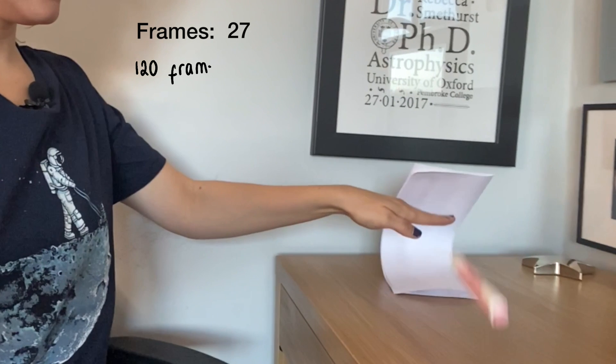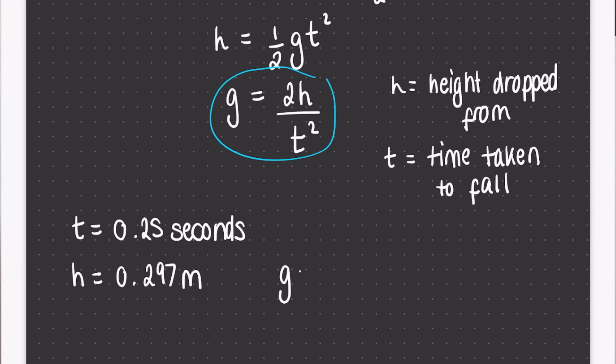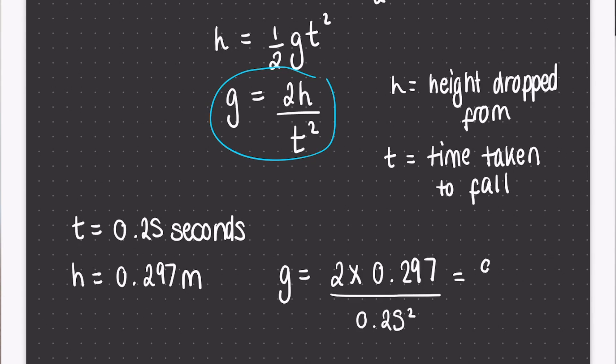Playing the video back, it takes about 30 frames for the highlighter to fall from the top of the paper to the desk. My phone records at 120 frames per second, so it took the highlighter about 0.25 seconds — a quarter of a second — to fall from a height of about 0.297 meters. Plugging those numbers in: g equals 2 times 0.297 divided by 0.25 squared, which gives 9.5 meters per second squared. The accepted modern value is 9.8 meters per second squared, so it's pretty cool we can get that close just with a smartphone and a piece of paper. You can do it much more accurately in the lab with laser light gates and a higher frame-rate camera.